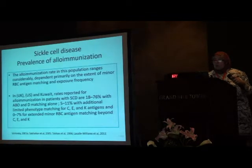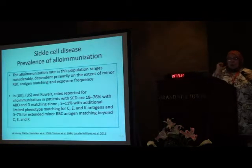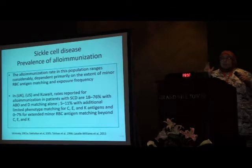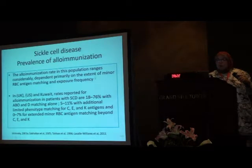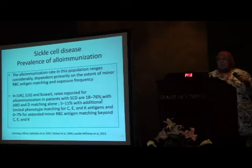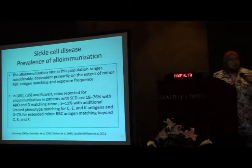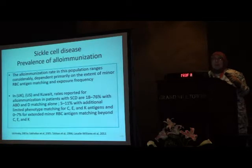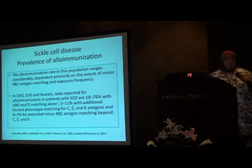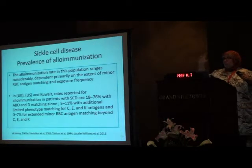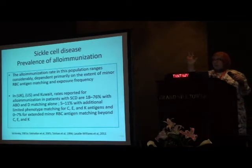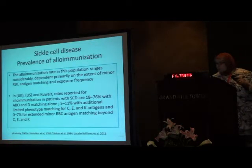Most importantly, data from the USA, UK, and Kuwait on alloimmunization in sickle cell patients shows: if you match only for ABO and D, alloimmunization ranges from 18% to 76%. If you additionally match for C, E, and Kell antigens, it drops to 5–11%. If you give fully phenotype-matched blood units, alloimmunization drops to 0–7%. Matching for C, E, and Kell is available and increases the cost of a blood unit by only about 70 Egyptian pounds — less than $10 — so it is worth it.